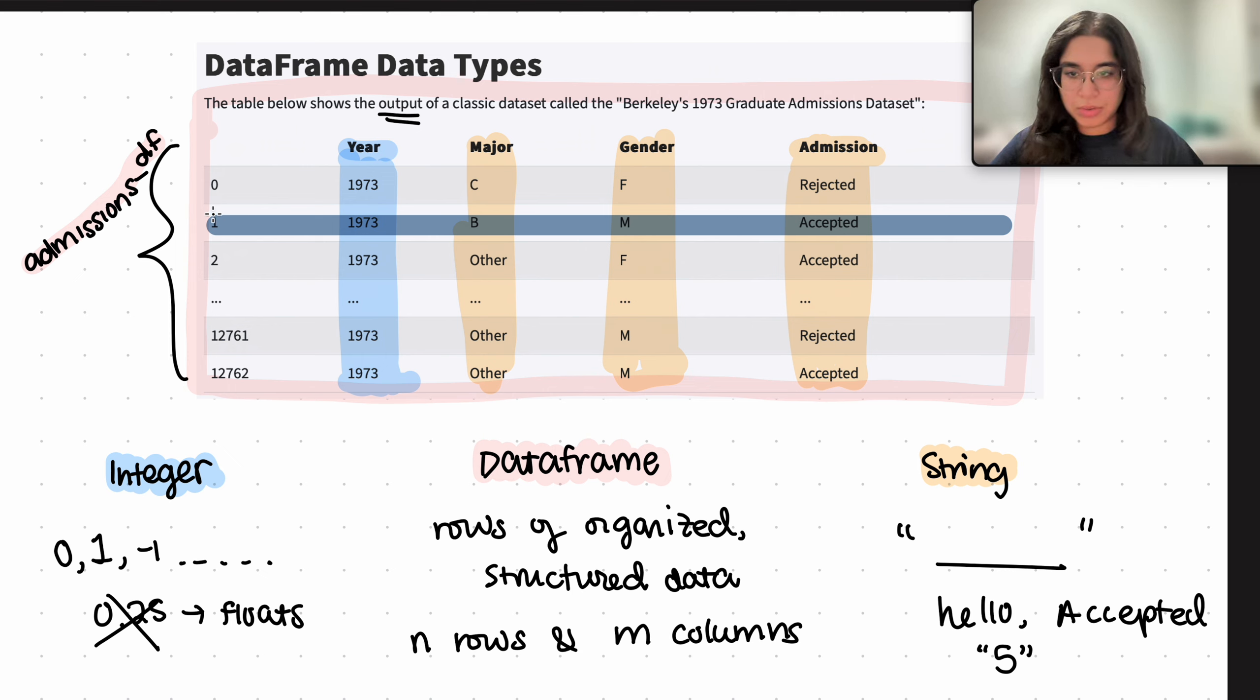The rows within a data frame can contain data consisting of different data types. For example, the row specified by index one here contains integers, that's the year, as well as strings. So we can see that this row has ints and strings, data of different data types. Same with the first row that is specified by index zero, same as row two, and so on.